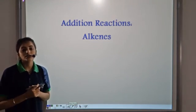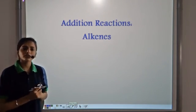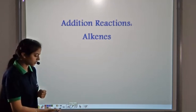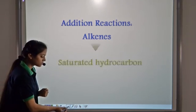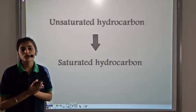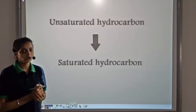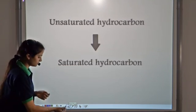Alkenes are unsaturated hydrocarbons and they give addition reactions. This is because all unsaturated hydrocarbons tend to become saturated. Let's see how they do that.